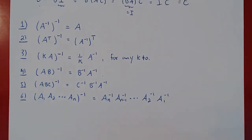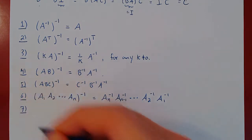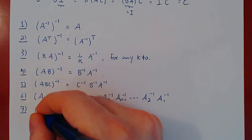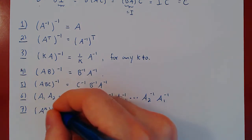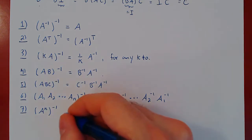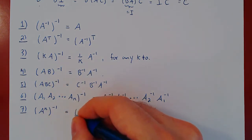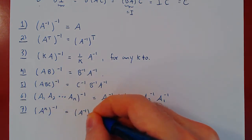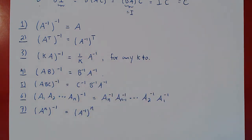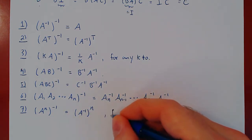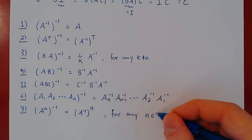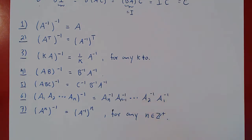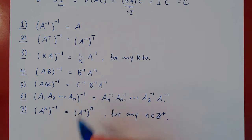A consequence of this: if you take the inverse of the nth power of A, where n is a positive integer, this is simply the nth power of the inverse. So the inverse of A to the n equals (A inverse) to the n. This is true for any positive integer n.